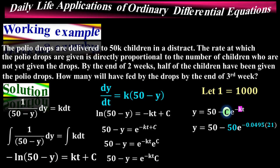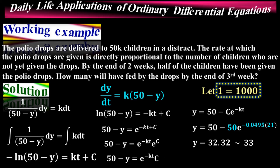With C = 50 and k = 0.0495 determined, we substitute these values into the equation. The task is to find how many children have received the drops after three weeks, so t = 21 (21 days). Solving gives y ≈ 32.32, which is approximately 33. Since 1 equals 1,000, this means approximately 33,000 children have been given the drops after three weeks. This is the final answer.